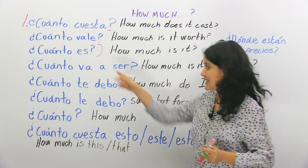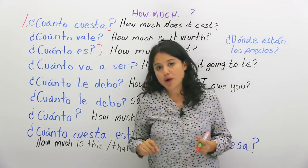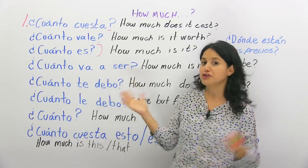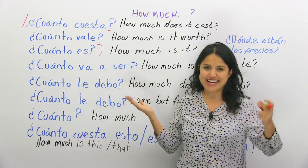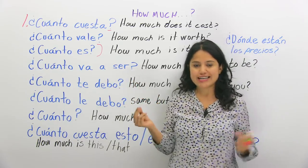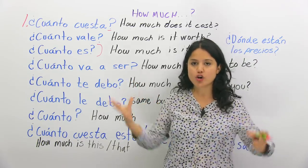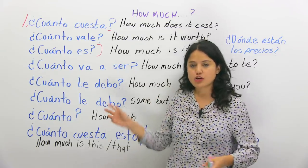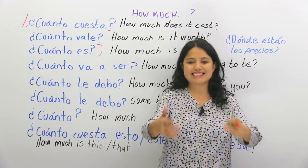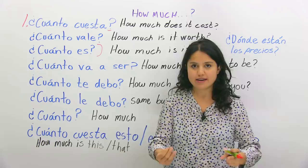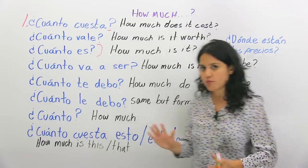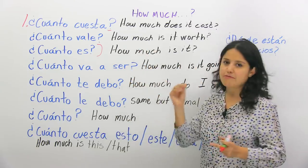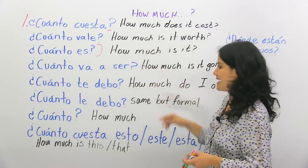Instead of ¿Cuánto es? you can also say ¿Cuánto va a ser? — 'How much is it going to be?' It's the future way to say it. Same meaning, just a different phrasing.